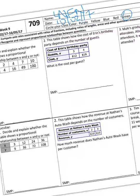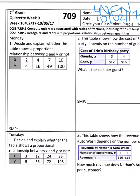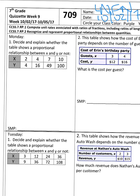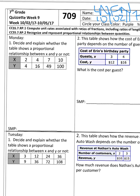Number one says, decide and explain whether the table shows a proportional relationship between X and Y or not. So the first thing that I want you guys to keep in mind is that one of our key terms is proportional relationship.